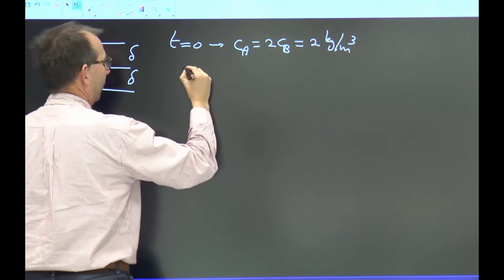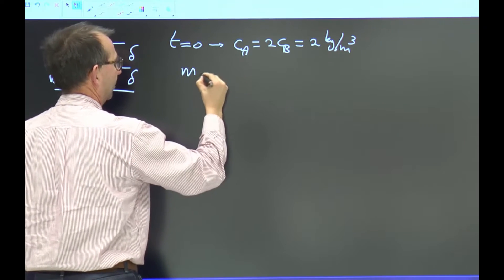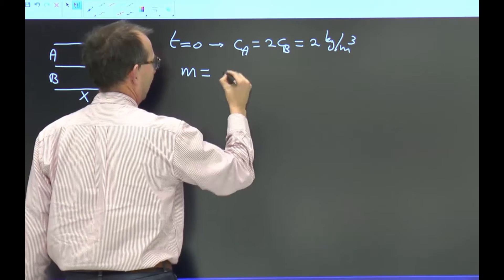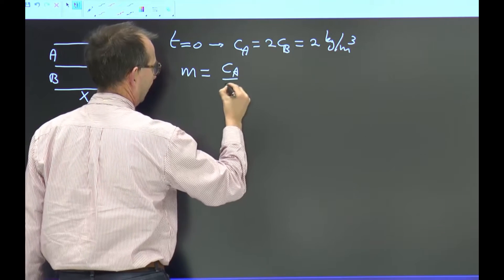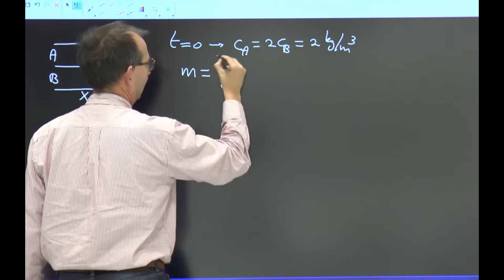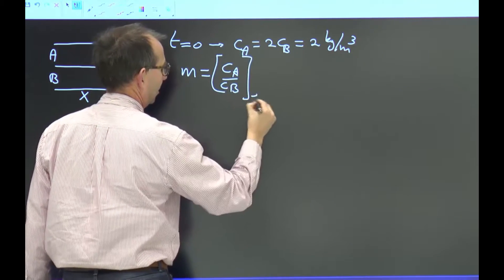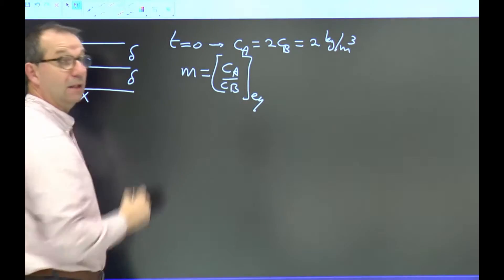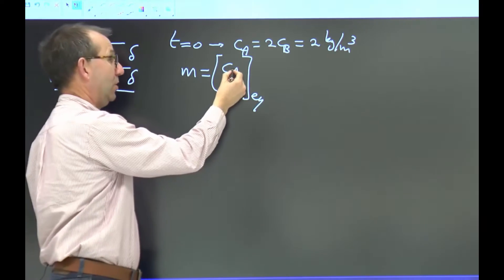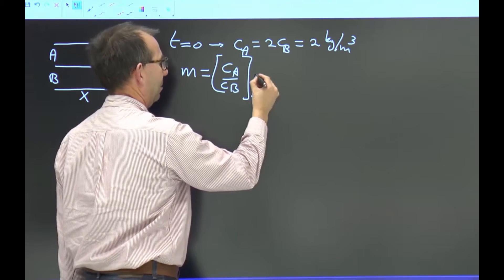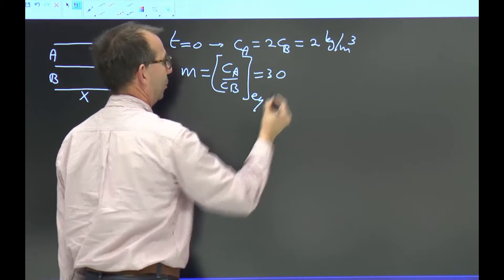We do have that in equilibrium the species X is distributed such that the ratio in equilibrium between concentration of X in A over that in B is M equaling 30.